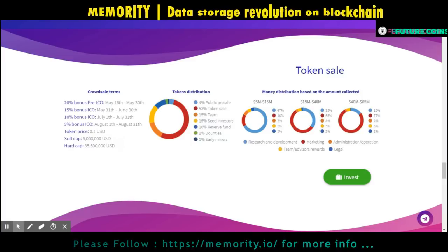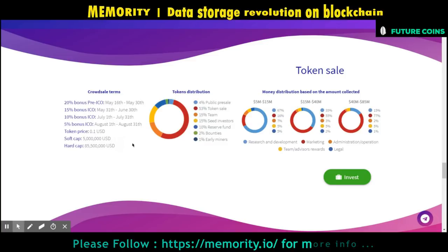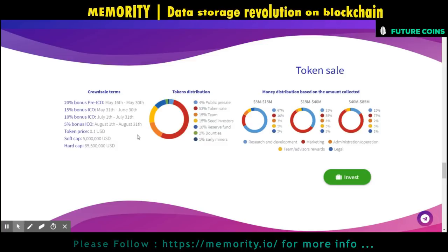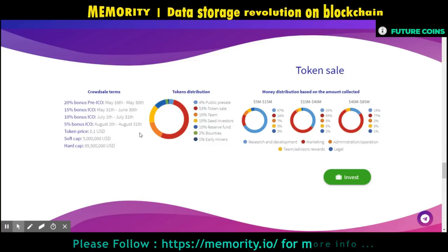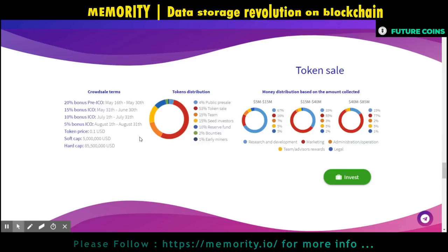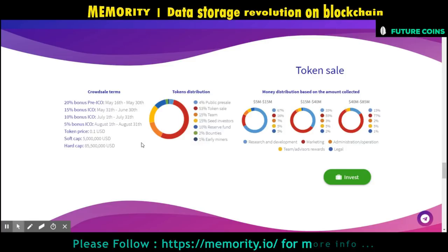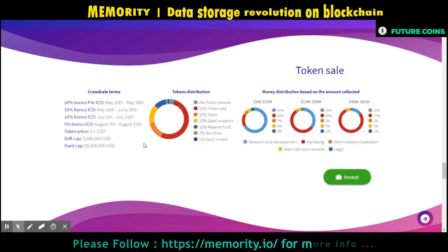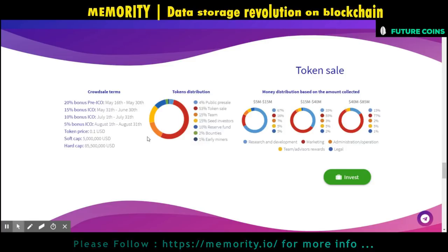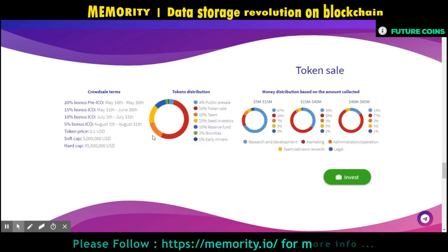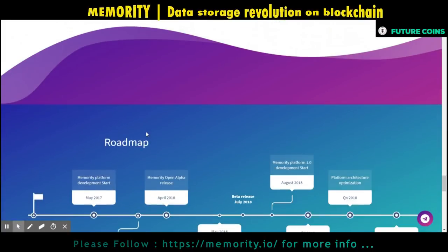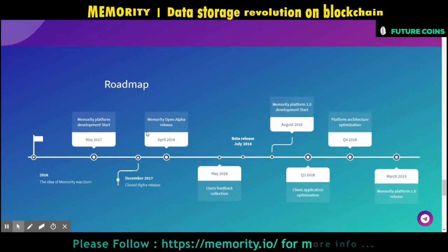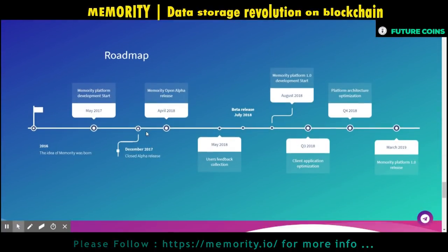For token distribution, they have allocated 53% for the token sale, 15% for the team, 15% for seed investors, 10% as a reserve fund, 4% for the public pre-sale, 2% for bounties, and 1% for early miners.